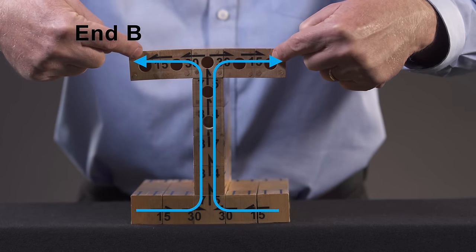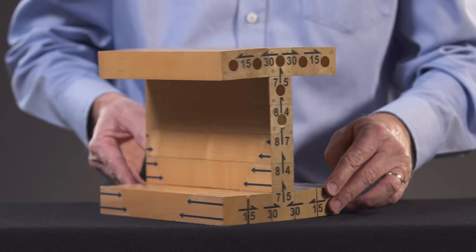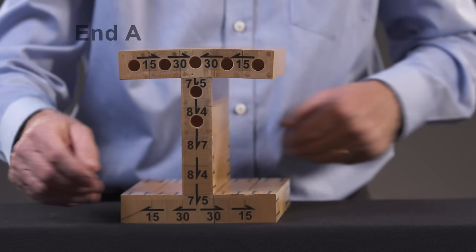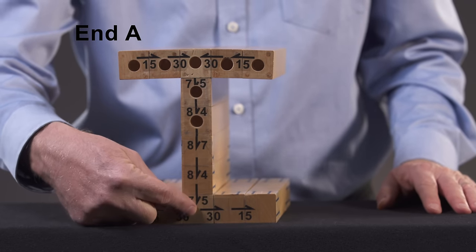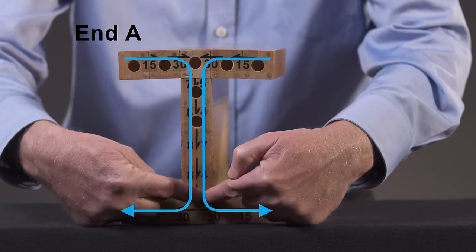Collectively, these shear arrows show how the shear flows over the cross-section, and when taken together, they reveal what is known as the shear flow.